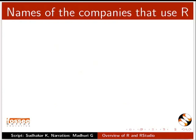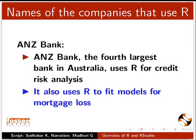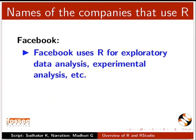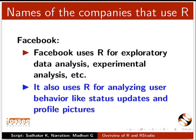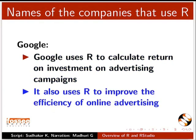Now we will learn about some of the companies that use R. ANZ Bank, the fourth largest bank in Australia, uses R for credit risk analysis and to fit models for mortgage loss. Facebook uses R for exploratory data analysis, experimental analysis, and analyzing user behavior like status updates and profile pictures. Google uses R to calculate return on investment on advertising campaigns and to improve the efficiency of online advertising.